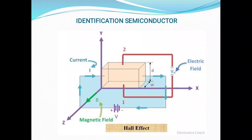Hall voltage can be measured using a screw gauge or vernier caliper. Current along the x-axis can be measured using a milliammeter or microammeter. Magnetic flux can also be measured using a specific instrument. The Hall voltage developed depends on the type of semiconductor. In N-type, electrons migrate downward; in P-type, holes migrate downward. As charge carriers are separated, a voltage and Hall field are developed. By calculating the Hall coefficient — if positive, it is P-type; if negative, it is N-type semiconductor.